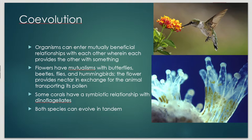These organisms are evolving in tandem, but to each other's benefit. One has mutations or variations, and this causes selective changes in the other species, which then causes selective changes in the former, and so on. They enter mutually beneficial relationships wherein each provides the other with something. Flowers have mutualisms with butterflies, beetles, flies, and hummingbirds — the flower provides nectar in exchange for the animal transporting its pollen.